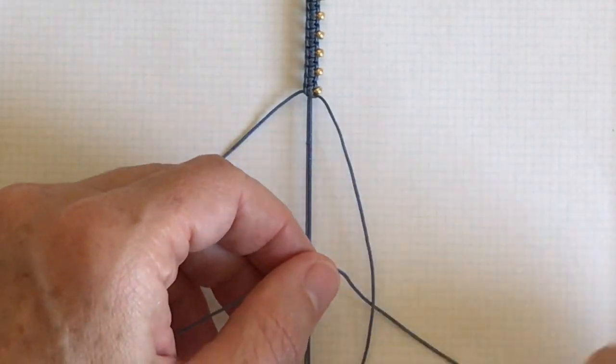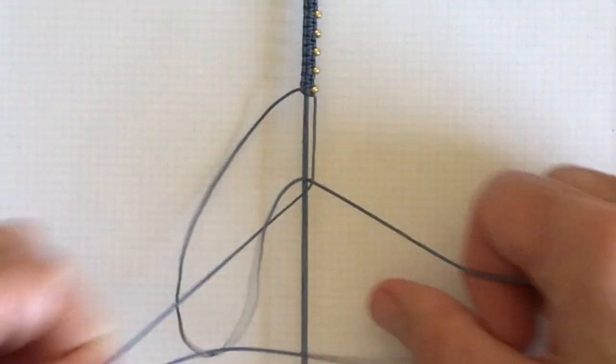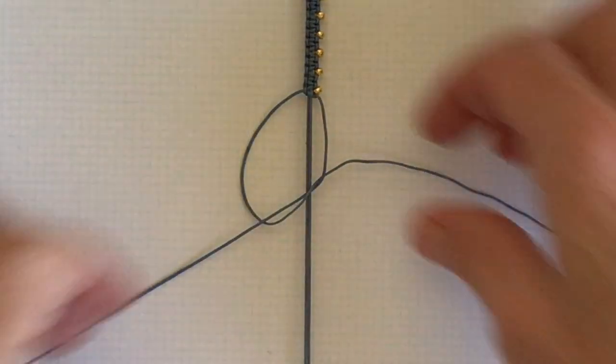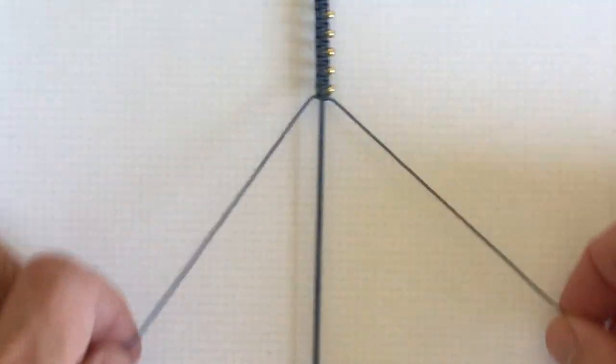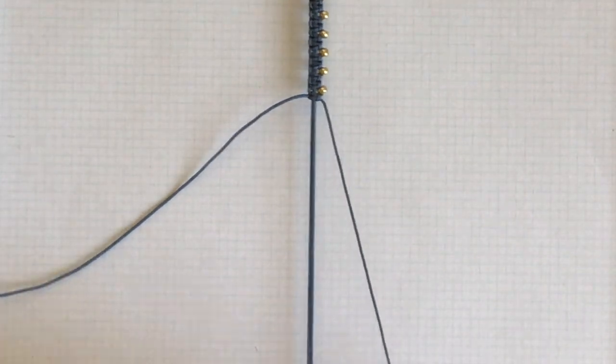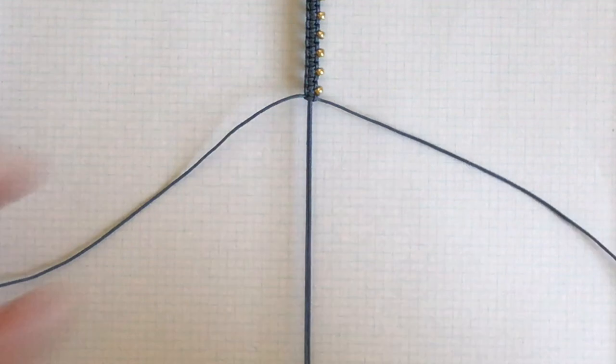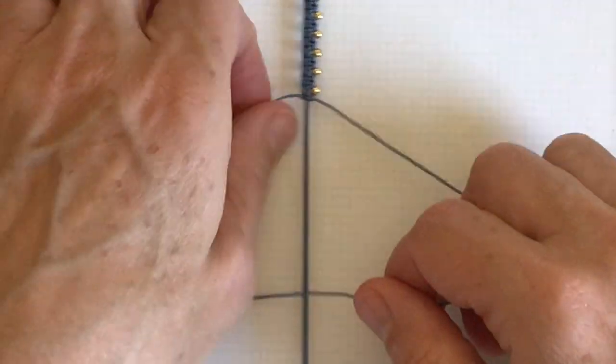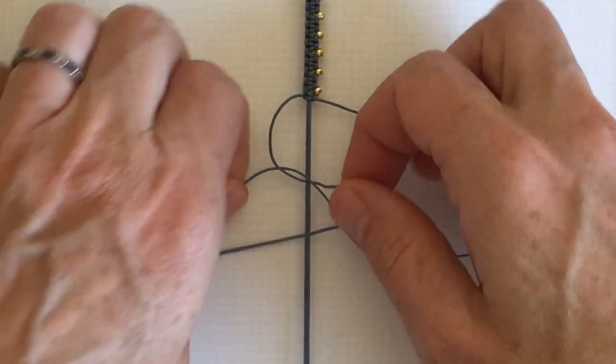And then the right hand cord goes over and then up and through. Then I'm going to do another one without a bead on the right hand side. Number four, backwards four. And then the left hand cord comes over and up and through.